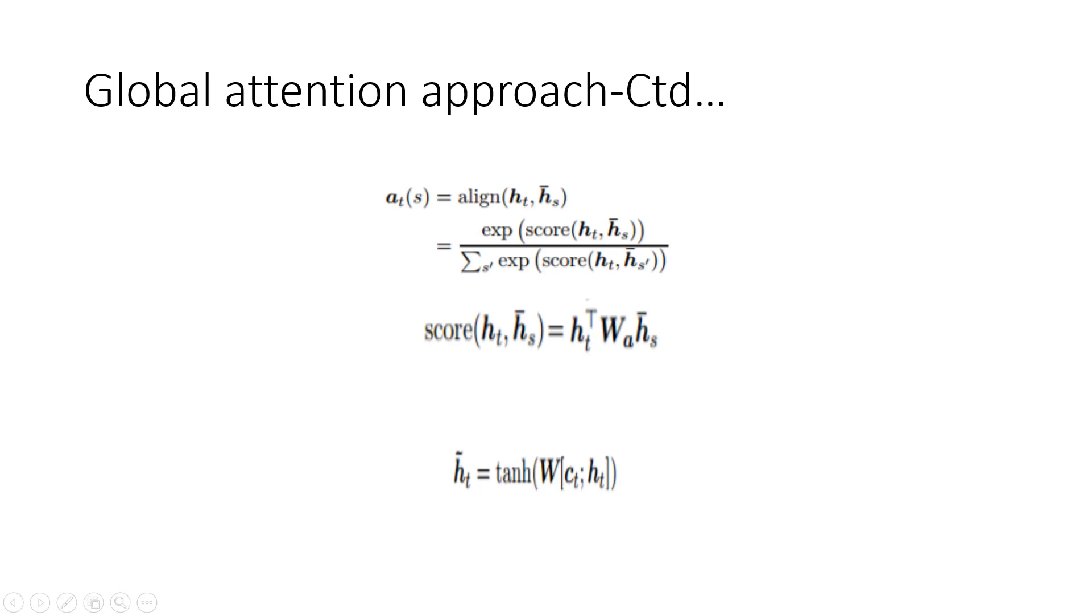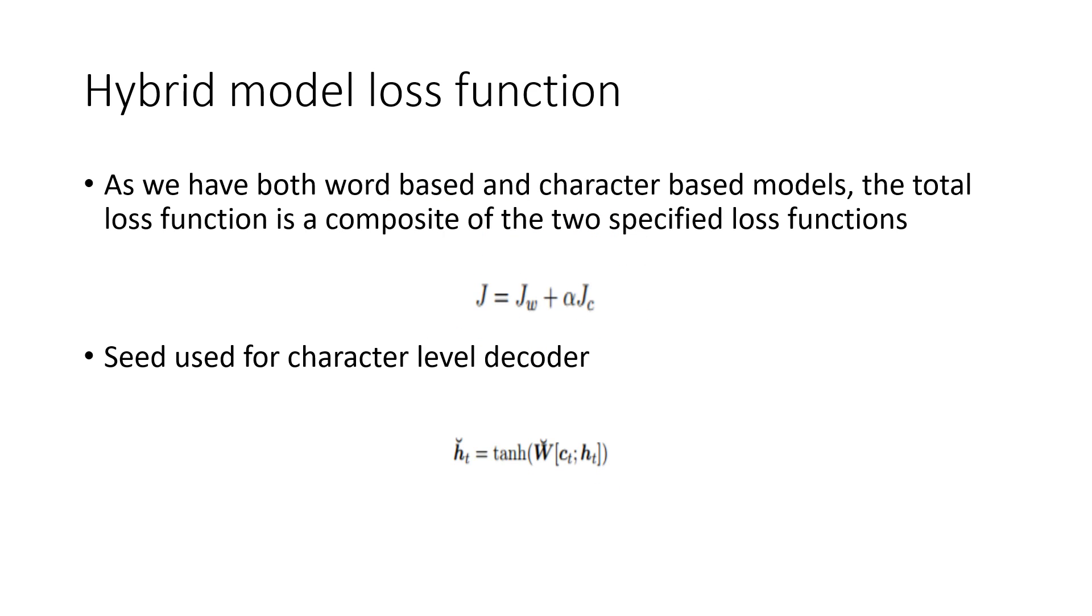In the alignment step, the source hidden state is compared with the target hidden state and we get the attentional vector. The alignment vector is calculated as the tanh function or the weighted average of context vector and the hidden state vector. Tanh is the activation function for our network as we are using LSTM or long short term memory approach.